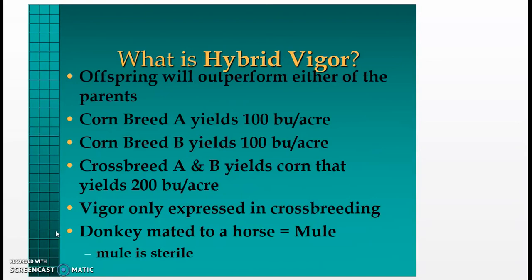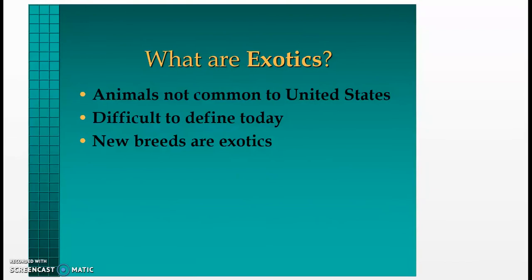What is hybrid vigor? Hybrid vigor is when offspring outperform either of the parents. For example, corn breed A yields 100 bushels per acre and corn breed B also yields 100 bushels per acre. If you crossbreed A and B, you get corn yielding 200 bushels per acre. Hybrid vigor is only expressed in crossbreeding. A donkey mated to a horse equals a mule, but a mule is sterile.